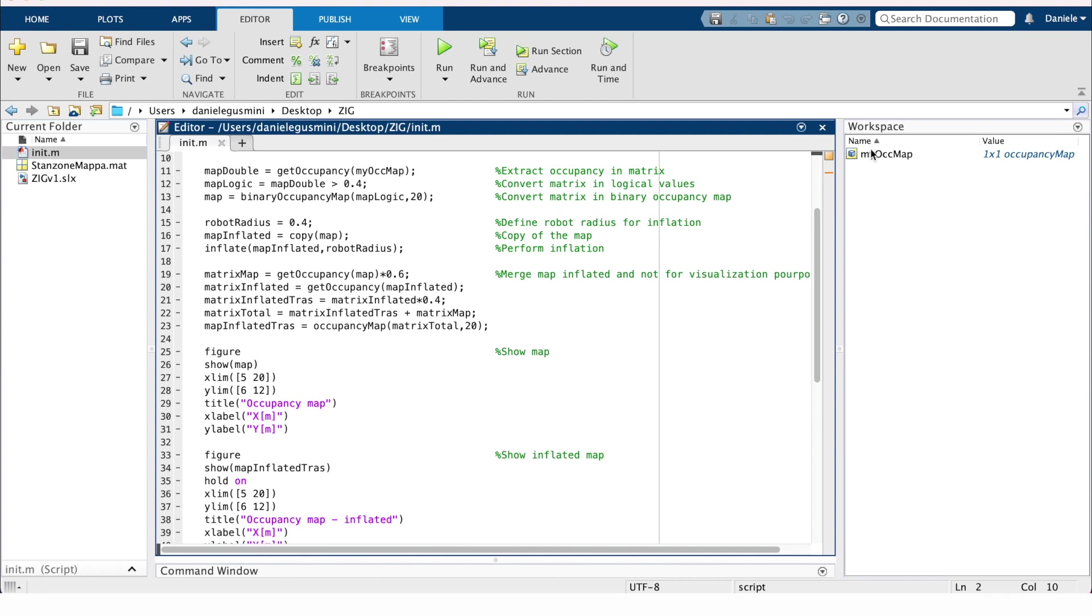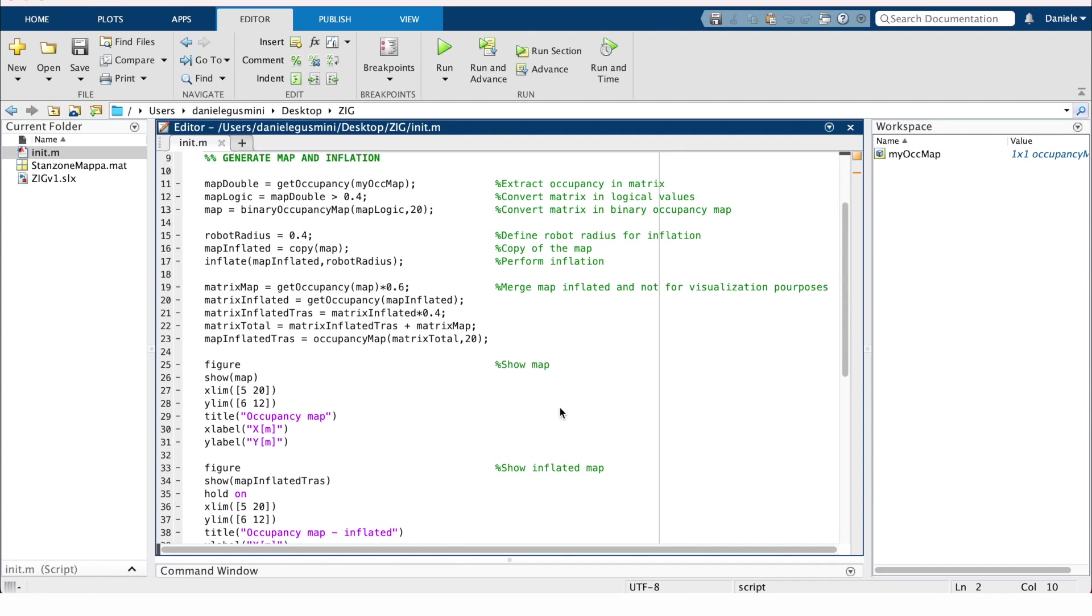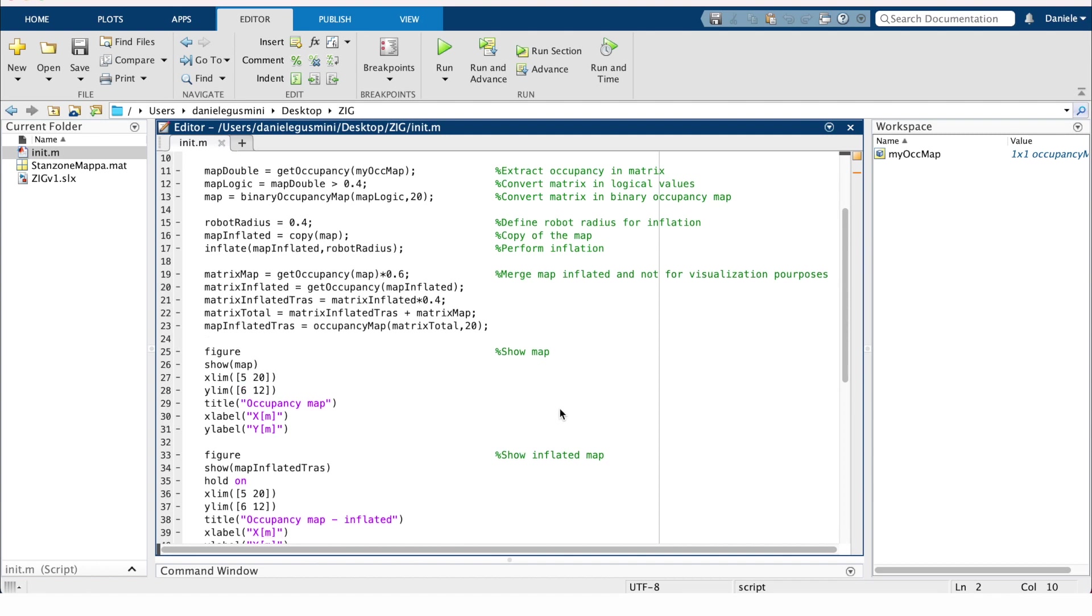Let's see together all of these steps. This is an occupancy map defined in a double form. For each point of the map, we have a double value that defines the possibility of having an obstacle. In order to perform fast and reliable obstacle avoidance, we should go to a binary occupancy map with zones considered free and zones considered occupied. We convert it to the logic version through a simple comparison to a threshold. Each point with a value above 0.4 will be 1, otherwise 0. This will be converted to a binary occupancy map.